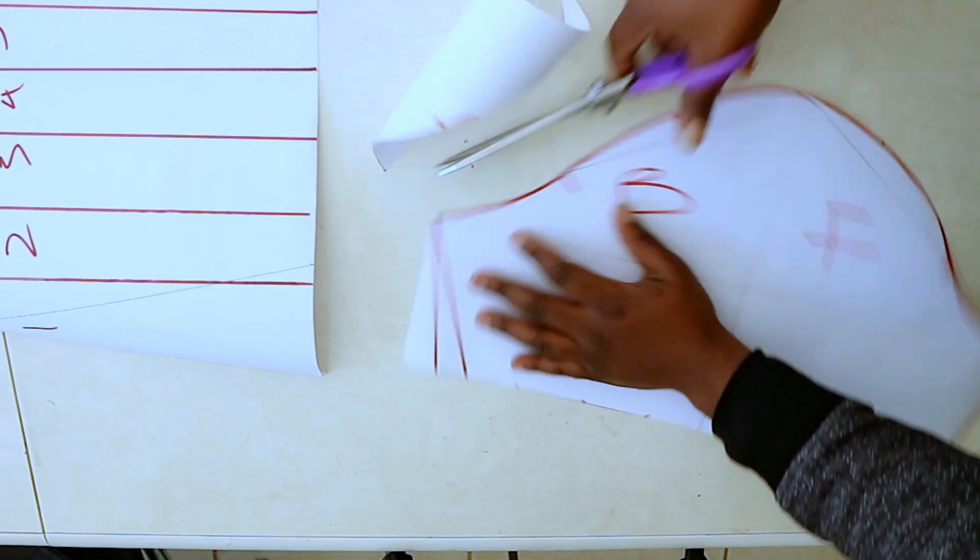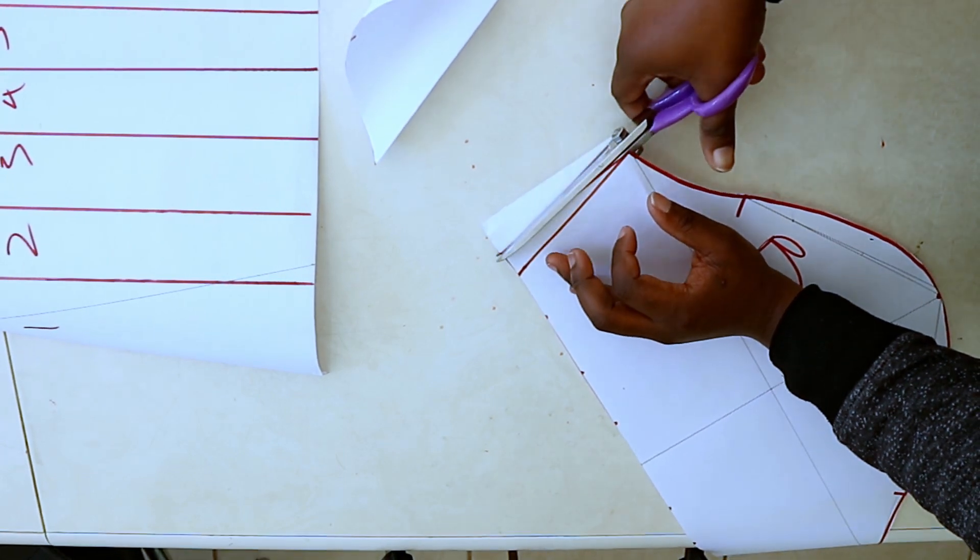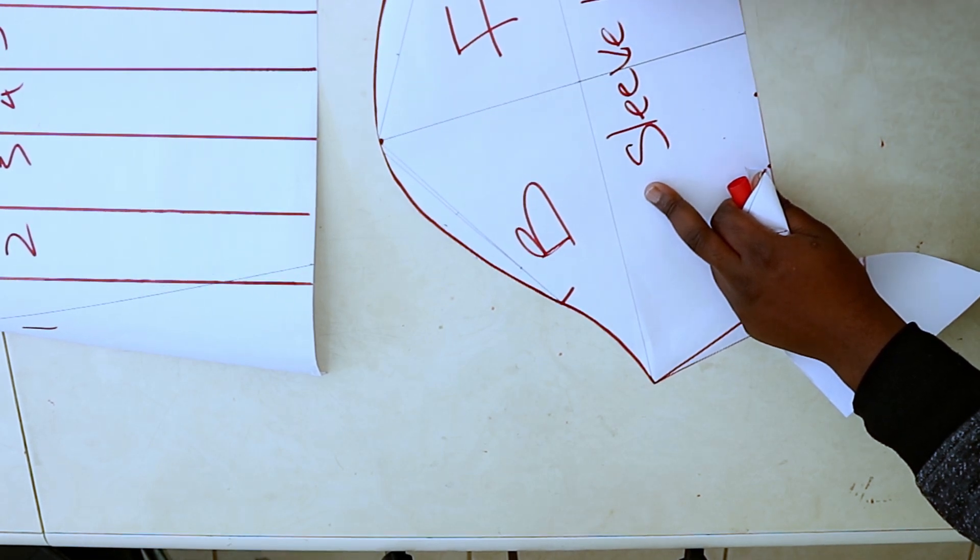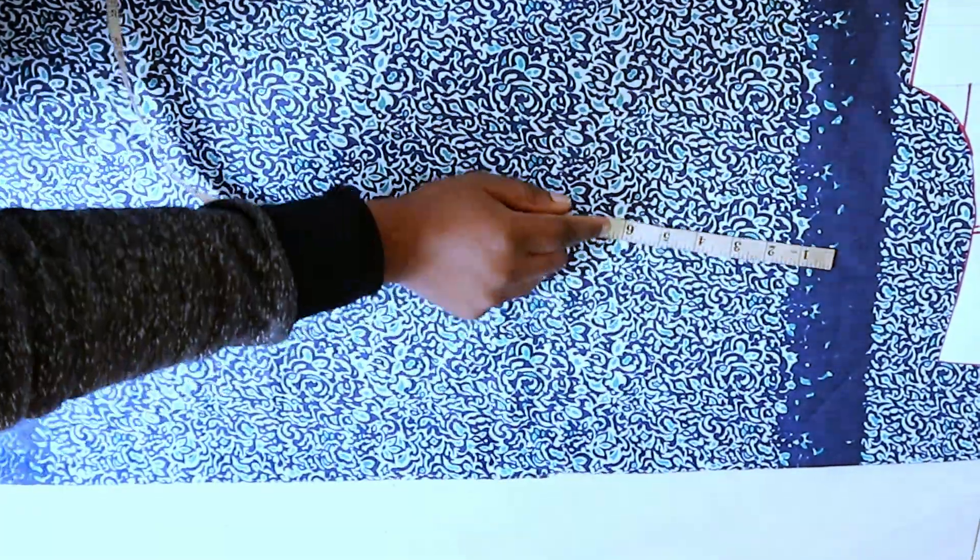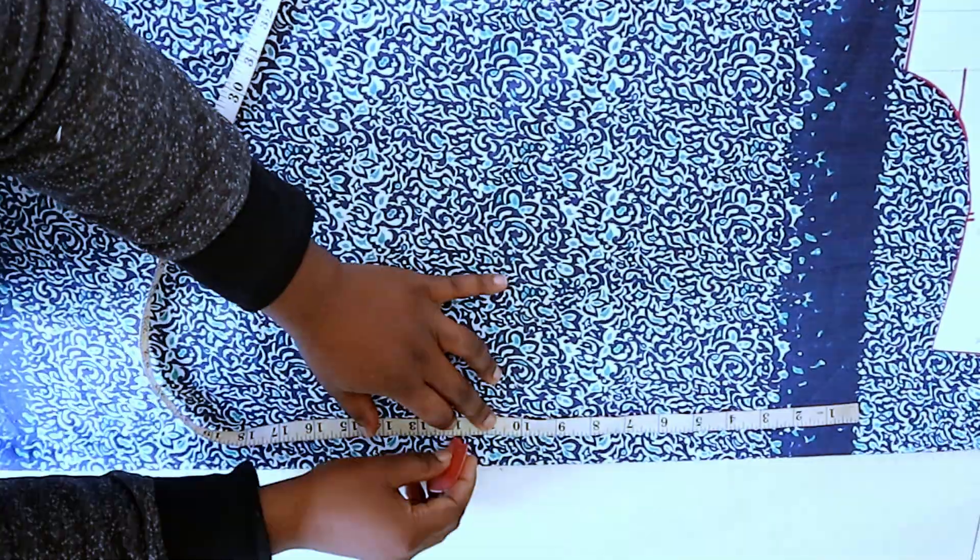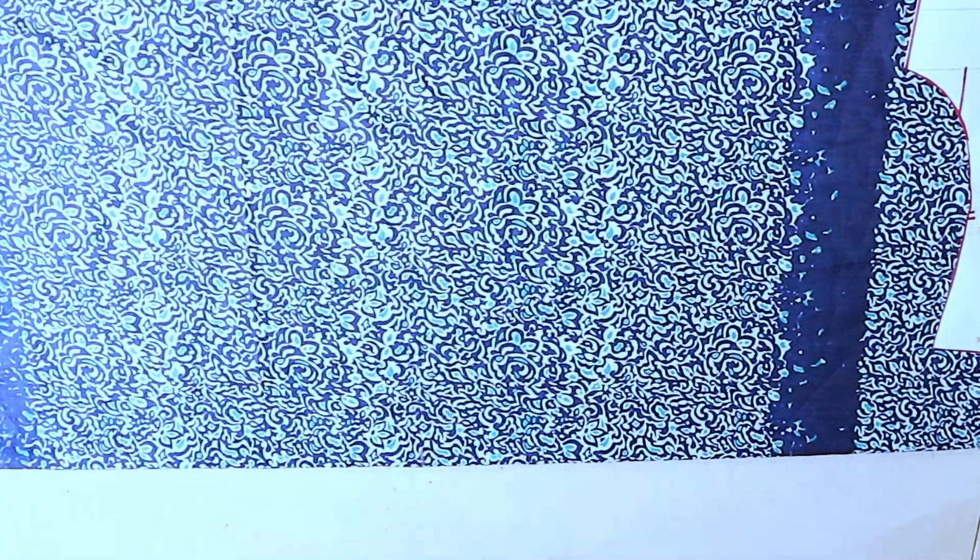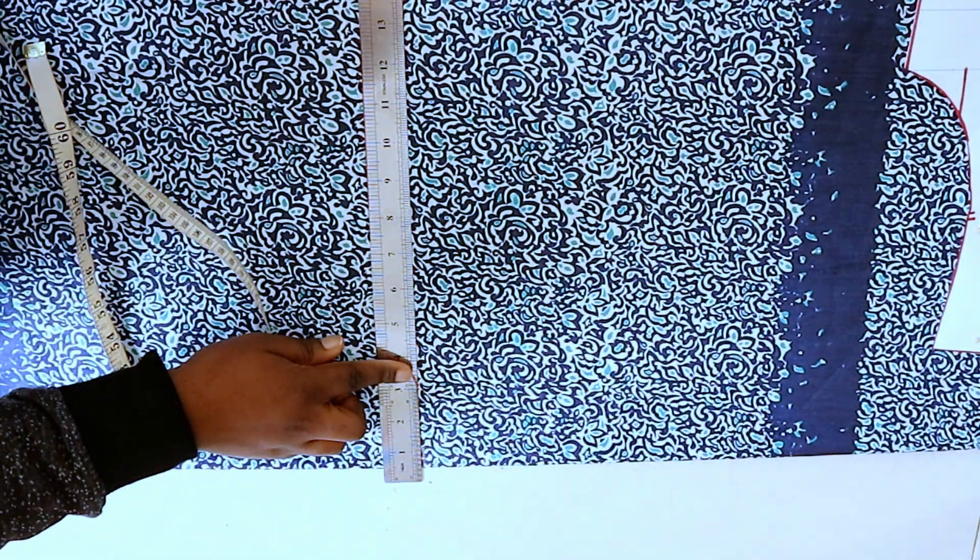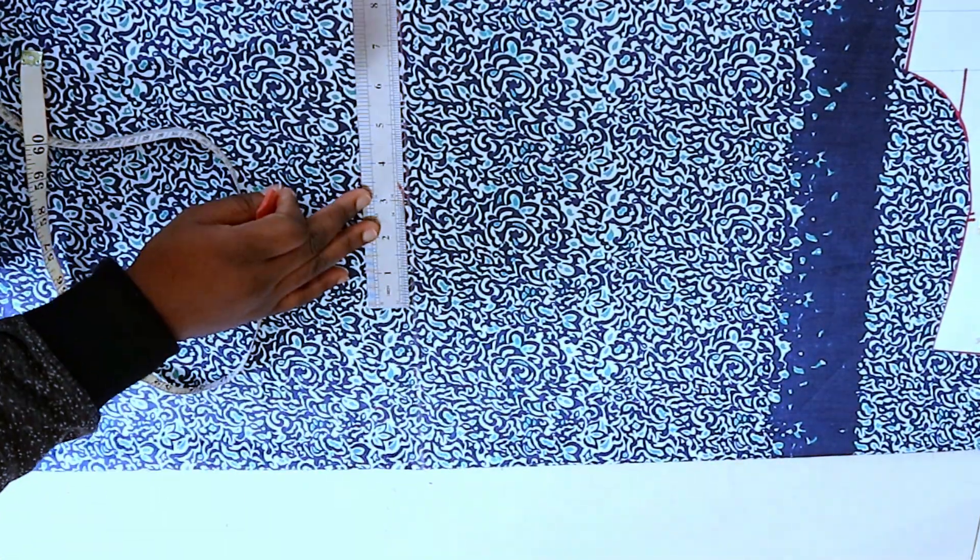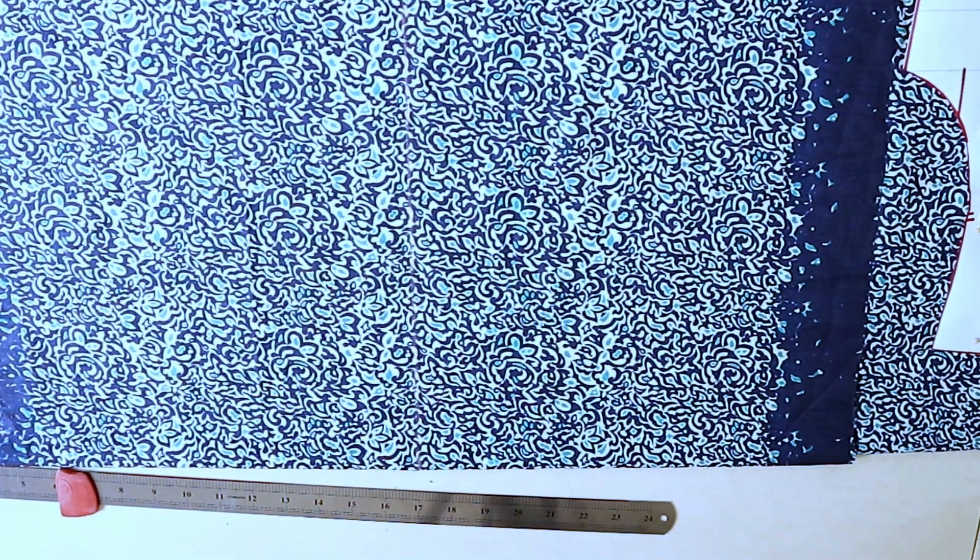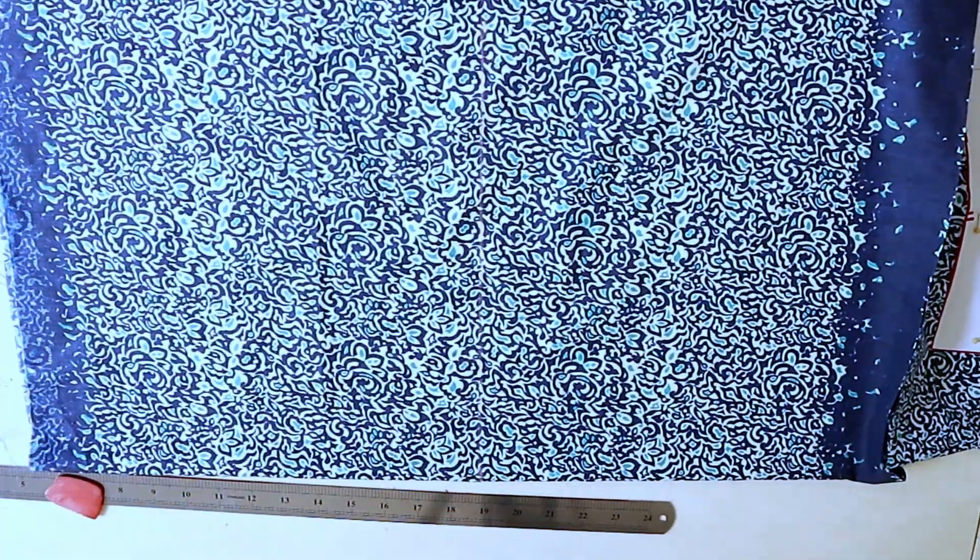Now you can cut out your pattern. I wanted to use the slash and spread method for the bottom half of the sleeve, but as I was cutting my fabric, I realized that fabric was not enough for that method. So I just gathered the fabric.